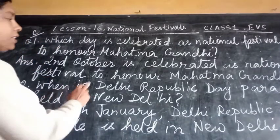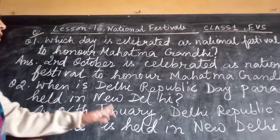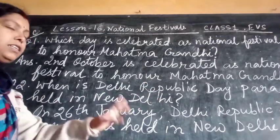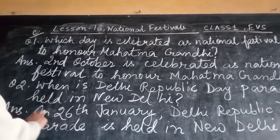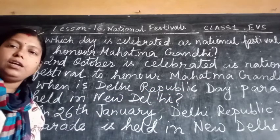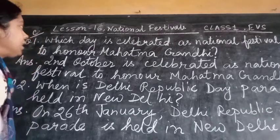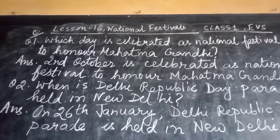Next question: when is the Delhi Republic Day Parade held in New Delhi? On 26th January, the Delhi Republic Day Parade is held in New Delhi. You have to write down these question answers in your copy. Once again — which day is celebrated as a national festival to honor Mahatma Gandhi? 2nd October. When is the Delhi Republic Day Parade held? On 26th January.